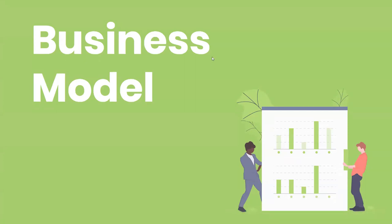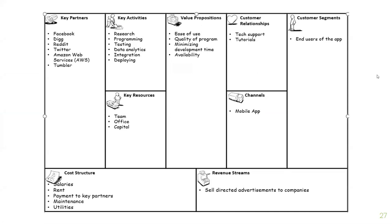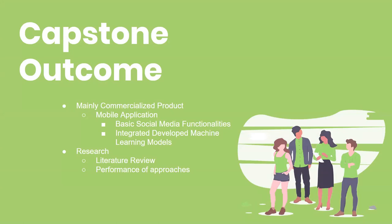For our business model, our customers are end users who interact with the mobile application, which offers a high-quality, easy-to-use program with technical support. Our team works in an office, further developing the application using social media APIs from Twitter and Reddit, deploying on cloud services like AWS. Costs consist mainly of salaries, office rent, and key partner payments, hopefully covered by selling directed ads to companies. As our capstone outcome, we have the mobile application integrated with our machine learning models and we are writing a research paper to document all our work and results. Thank you everyone.